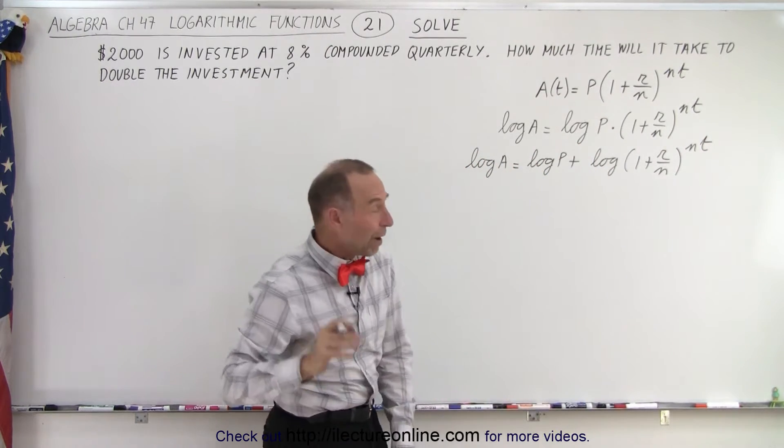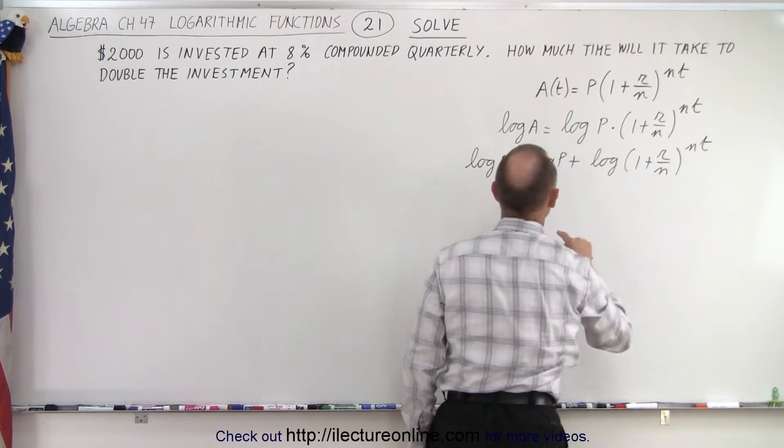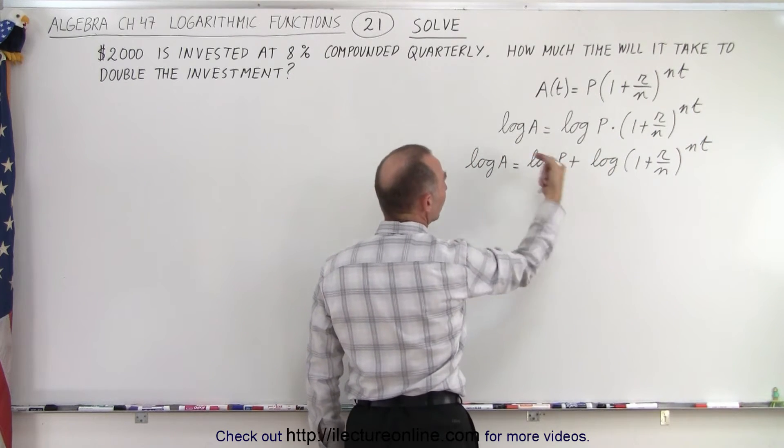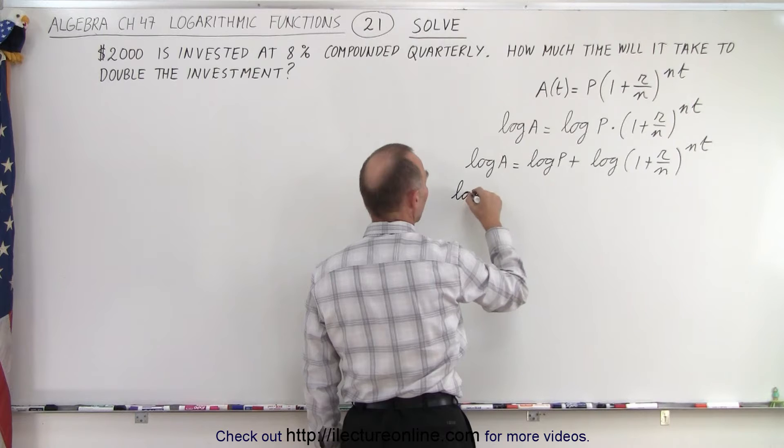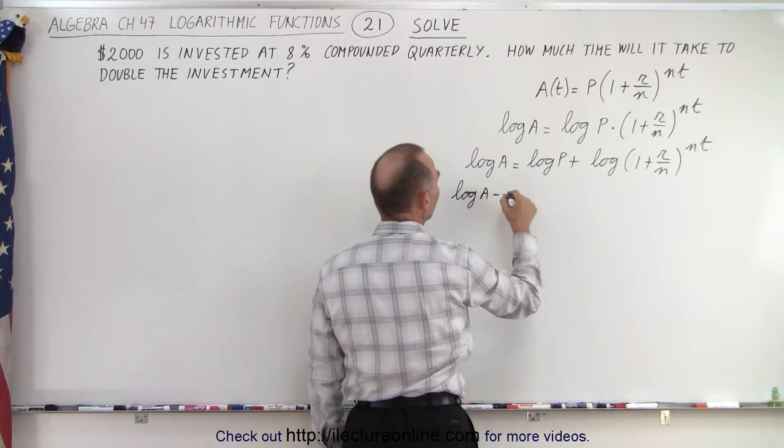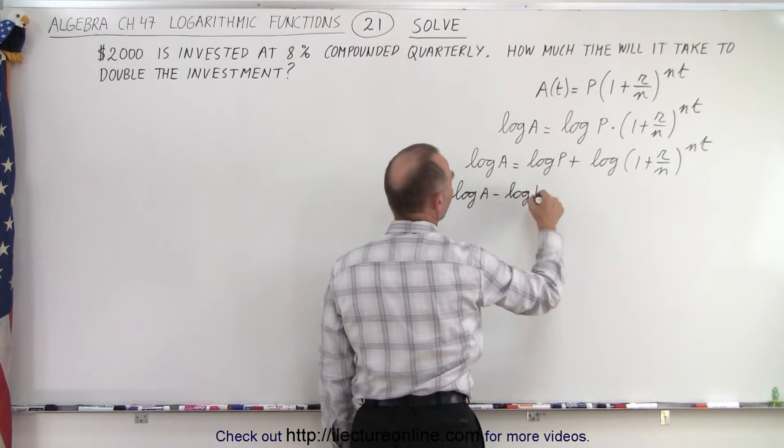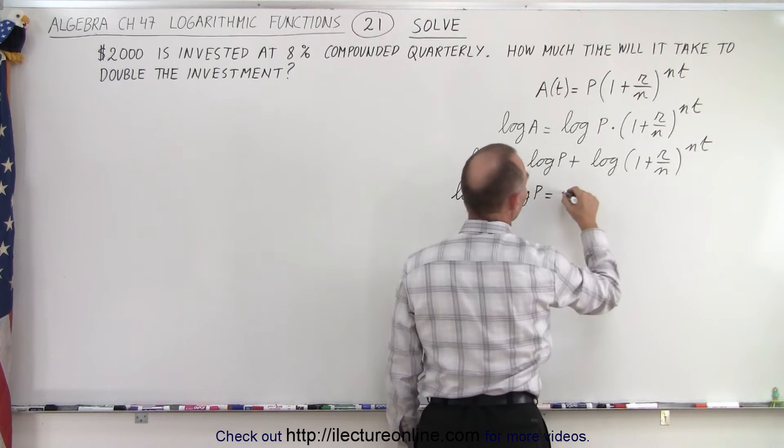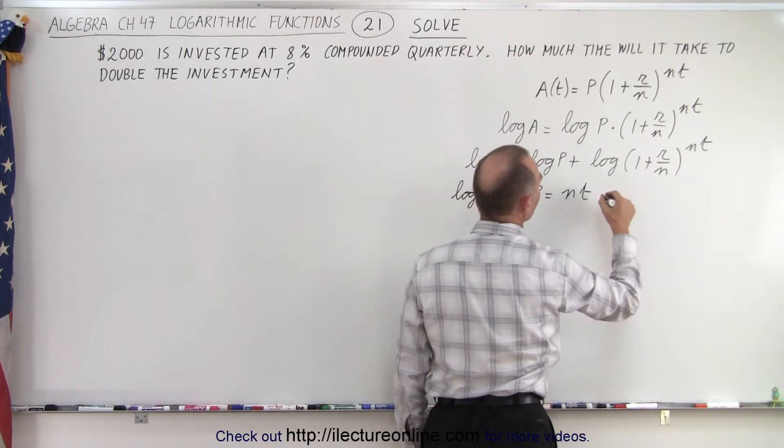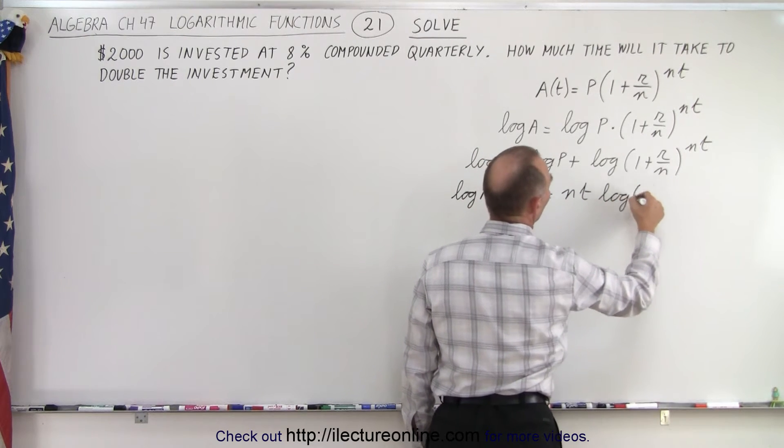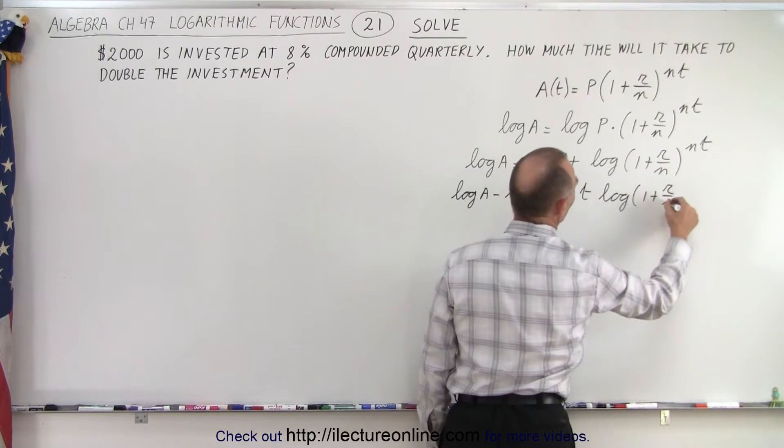Now we can use the power rule to take n times t and put it in front over here, and we take the log of P and move it to the left. So here we get the log of A minus the log of P is equal to n times t times the log of 1 plus r over n.